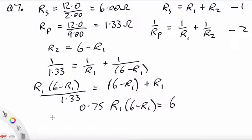So let's work this out. We have 0.75 times R1 minus 0.75 times R1 times R1. So that's R1 squared equals 6. So I'm going to go over the page here, but you can see we are heading towards a quadratic equation.